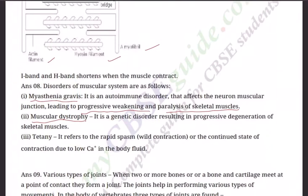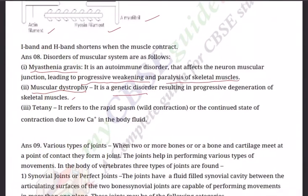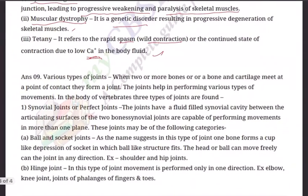Second disorder: muscular dystrophy, a genetic disorder resulting in progressive degeneration of skeletal muscles, where myofibrils and proteins like myosin are lost. Third: tetany, which refers to rapid spasm or continued state of muscle contraction due to low calcium in the body fluid. Increasing calcium intake helps, but with precaution — too much calcium can cause kidney stones. It is always better to take minerals in the form of fruits and vegetables.